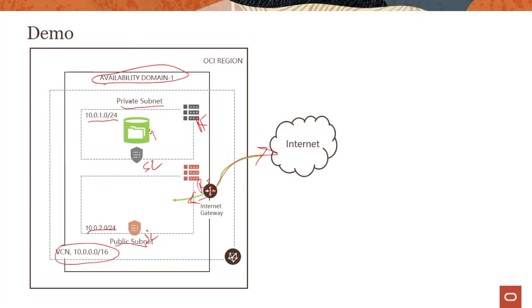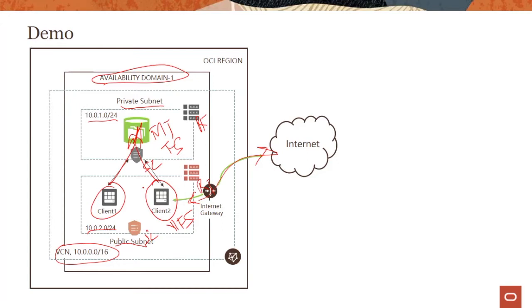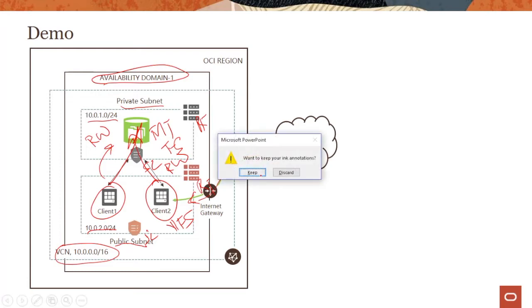I'm going to run my mount target and file system on the private subnet — it's secure and private. In the public subnet, I'm going to run two NFS clients which will access the file system through the mount target. Client one and client two both have read-write access. I'll show you a quick example of a shared file system where data is managed as a file hierarchy, and both clients can read and write to the same file system.